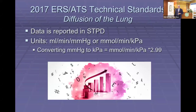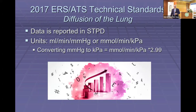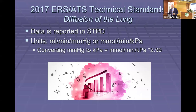The data is reported in STPD instead of BTPS. Units can be either milliliters per minute per millimeter of mercury, or millimoles per minute per kilopascal. The relationship is approximately 3 to 1 — so a TLCO of 10 in SI units equals a DLCO of 30 in millimeters of mercury. If reading European literature versus literature from the rest of the world, you need to be aware of which units are being used.